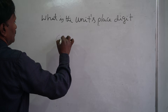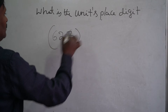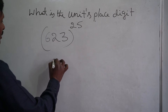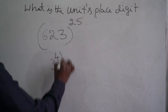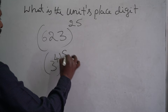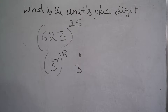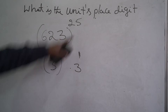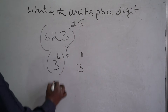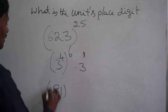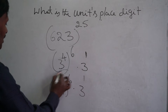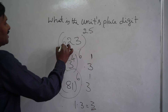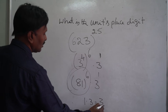Now let's see one more problem. Using the same process, write it as 3 to the power of something. Divide: 4 times 6 is 24, and the remainder is 1, so we have 3 to the power of 1 remaining. We know 3 to the power of 4 is 81, so the units place digit is 1 times 3, which equals 3. So the units place digit of 3 to the power of 25 is 3.